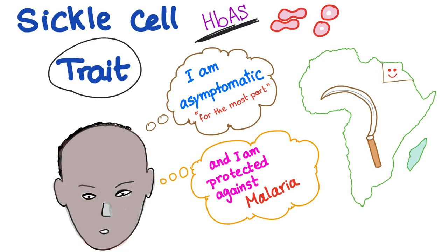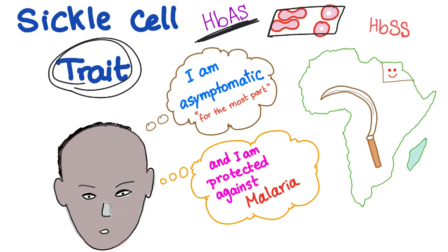The hemoglobin genotype in sickle cell trait is hemoglobin AS, in contrast with sickle cell anemia where the hemoglobin genotype was SS. In sickle cell trait, the cells are normal — the red blood cells do not sickle for the most part. They can sickle, but only under extreme conditions. This is the huge difference between sickle cell trait and sickle cell anemia.